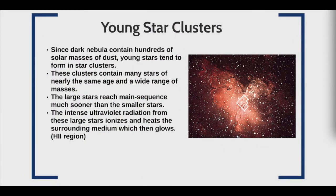The dark nebulae that form young stars are very large and tend to form many stars at a time. The large nebula clumps, and each clump may become a young star with a wide variety of different masses. Large stars will reach the main sequence before smaller stars and produce intense ultraviolet radiation, which ionizes and heats the surrounding medium, causing it to glow in what we call an H2 region.